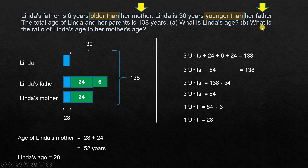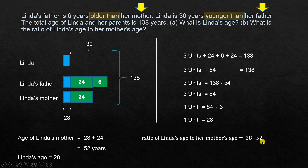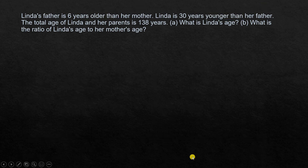Now for the next question: what is the ratio of Linda's age to her mother's age? Linda's age is 28 and her mother's age is 52, so the ratio is 28 to 52. Simplifying by dividing both by the common factor, that comes to 7 is to 13. That answers this question. Now we move on to solve this problem using algebra.